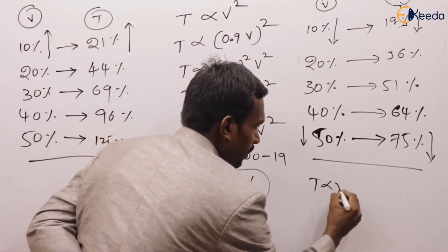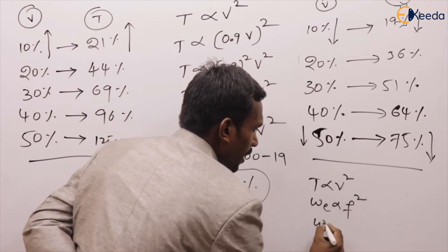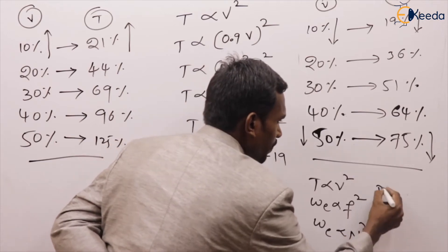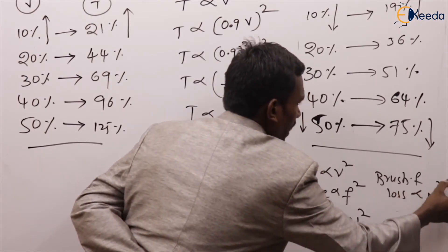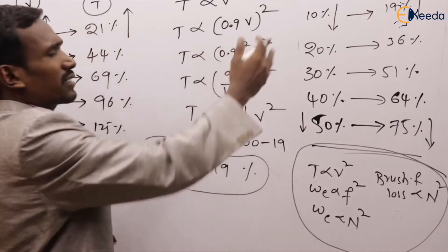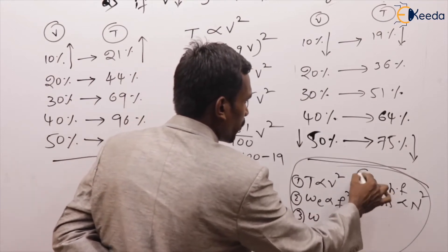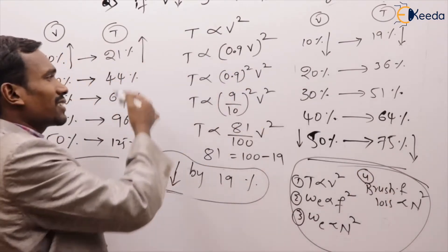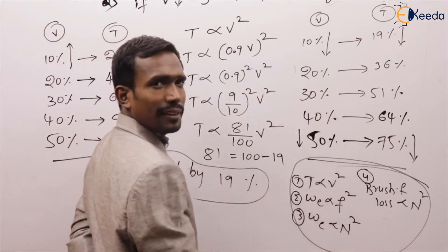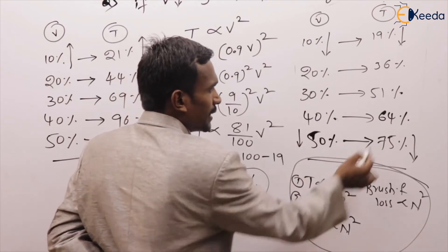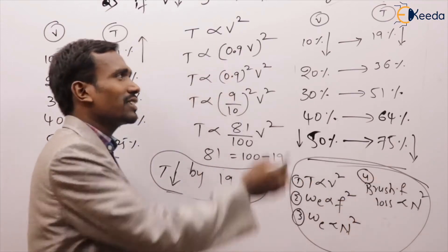For all square-law quantities — torque directly proportional to V squared, eddy current loss directly proportional to F squared or N squared, brush frictional losses directly proportional to N squared — the answers are the same. For example, if speed reduced by 30%, eddy current loss is reduced by 51%.